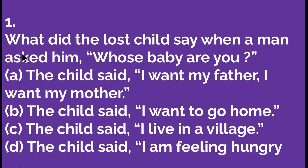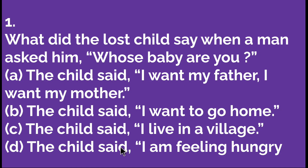The first question is: what did the lost child say when a man asked him, 'Whose baby are you?' Here are four options. Option A: the child said, 'I want my father, I want my mother.' Option B: the child said, 'I want to go home.' Option C: the child said, 'I live in a village.' Option D: the child said, 'I am feeling hungry.'